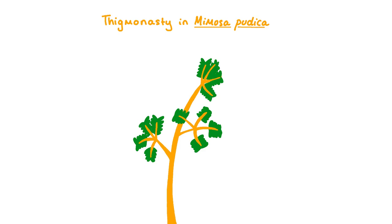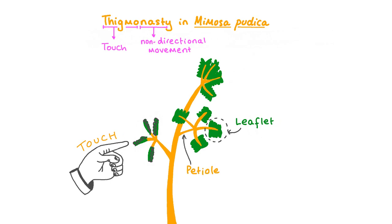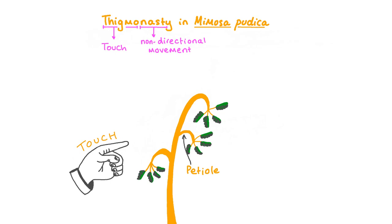Interestingly, some plants like the mimosa pudica are incredibly sensitive to touch. While the examples we just explored are fairly slow directional growth movements, the leaflets of mimosa pudica — one of which has been circled here — are able to snap shut in a matter of mere seconds in response to a stimulus like being touched. This response is called thigmonasty. The suffix 'nasty' refers to the fact that this is a non-directional response, and the prefix 'thigma' refers to touch. No matter the direction from which mimosa is touched, the leaflets always fold upwards from their horizontal position and the petiole always droops downwards.